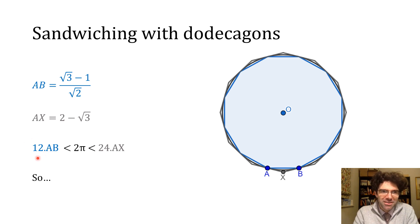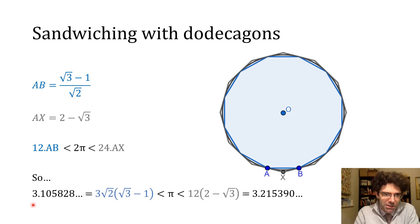And then putting this together, we've got AB, we've got AX, and we started out with our insight that the perimeter of the inner dodecagon, 12 lots of AB, would be less than the circumference of a circle, which is 2π, would be less than the perimeter of the outer dodecagon, which is 24 lots of AX, which is like half of one of the sides. And when we put this together and actually calculate what it gives us, we've narrowed down π to a range of about 0.1, which is not at all bad.